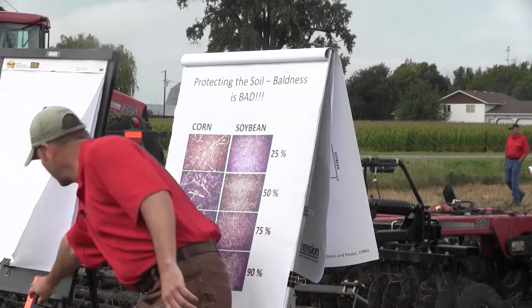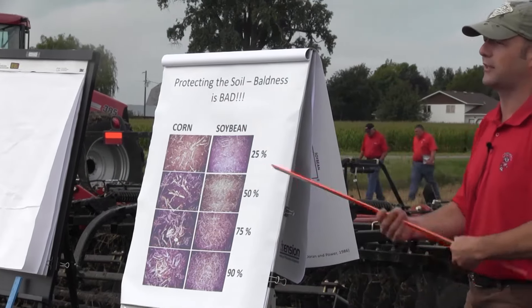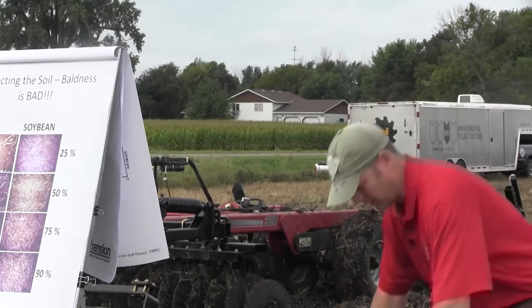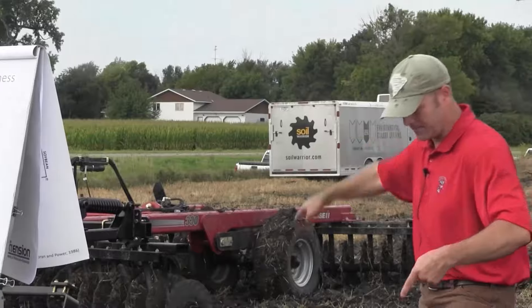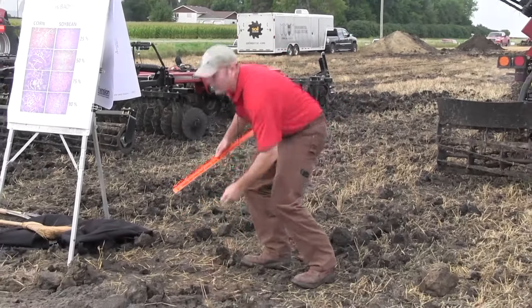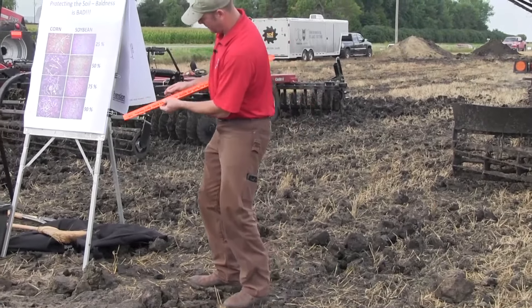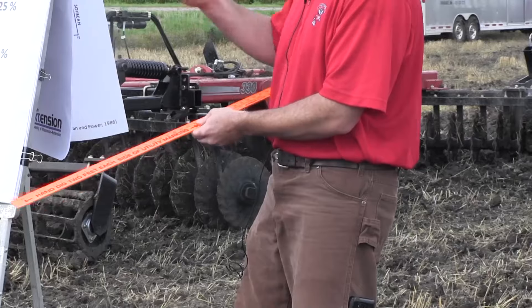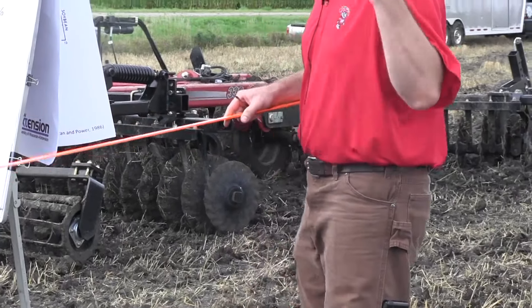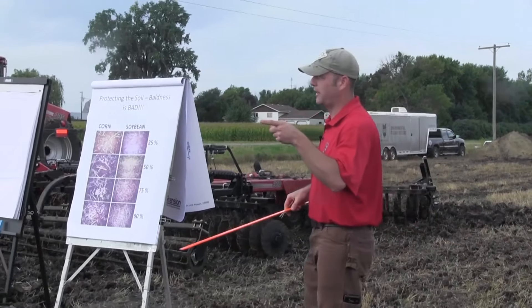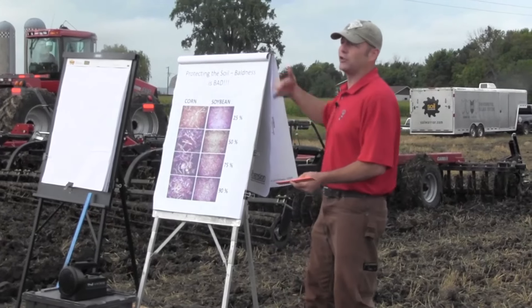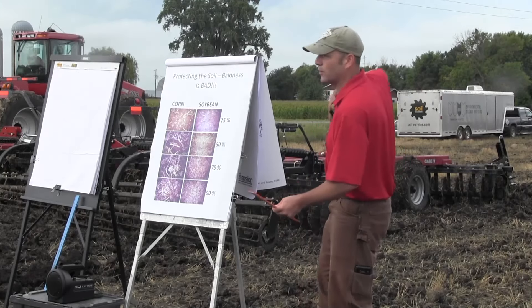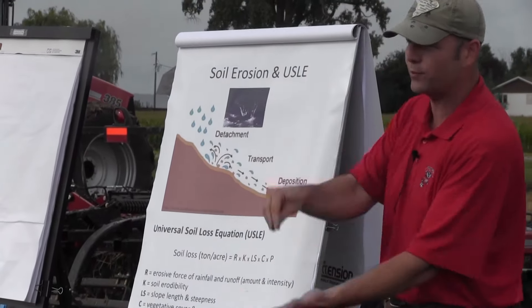At every foot mark, if there's a piece of residue count it as one; if nothing, count it as zero. Do this over 10 feet, multiply by 10 — that gives you a percentage residue cover. Do that several times across your field and zigzag it. Remember, rocks don't count. The three steps of erosion are: detachment when a raindrop hits the soil, transportation of particles, and deposition elsewhere in your field or ditch. You want to stop it at detachment — that's where residue comes into play.